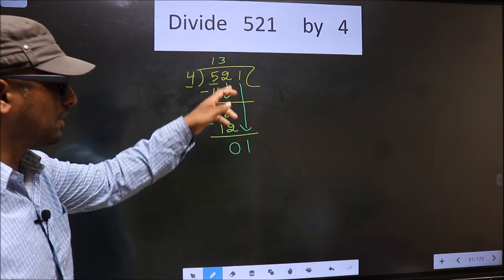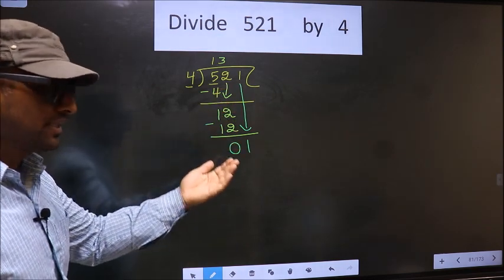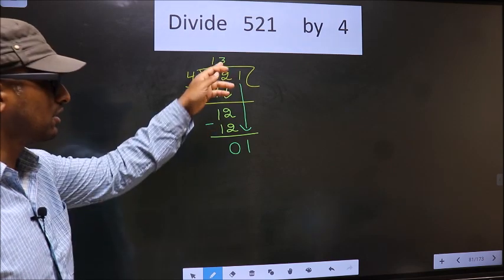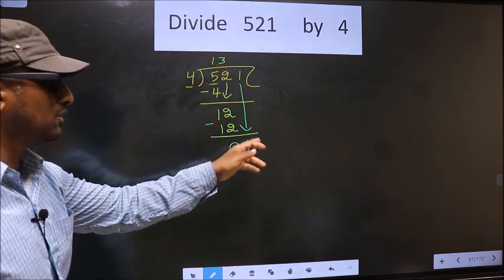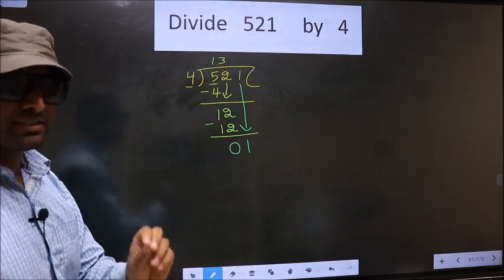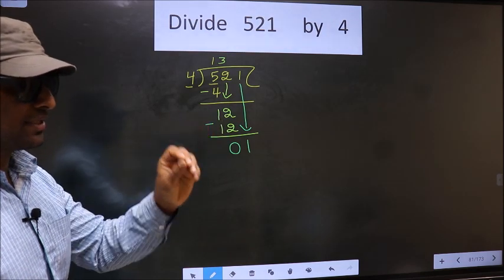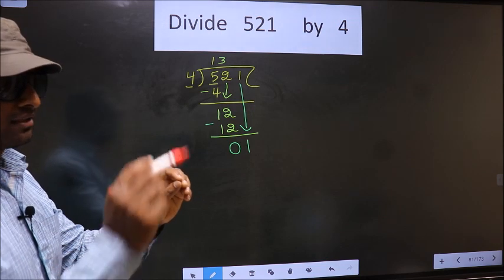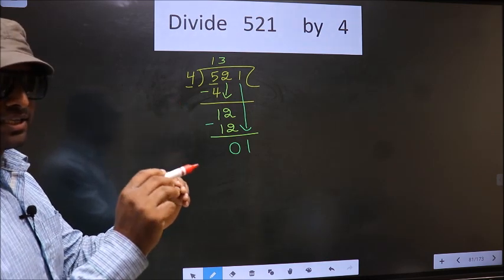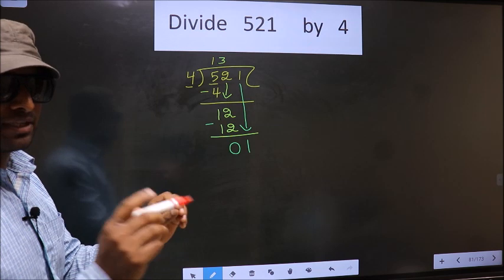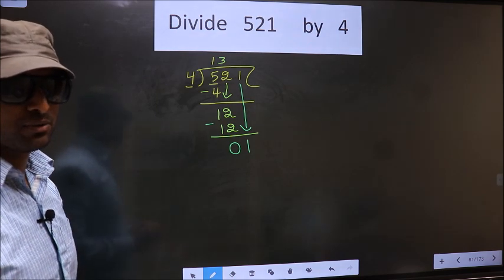Just now you brought the number down, and in the same step you want to put a decimal and take 0 here, which is wrong. I repeat: bringing the number down and putting a decimal and taking 0 both in the same step, you are not supposed to do.